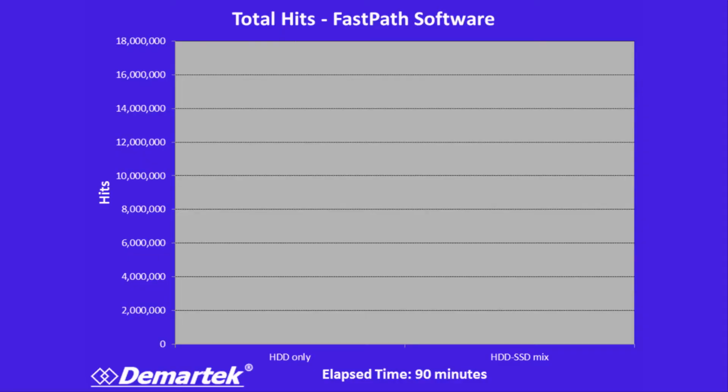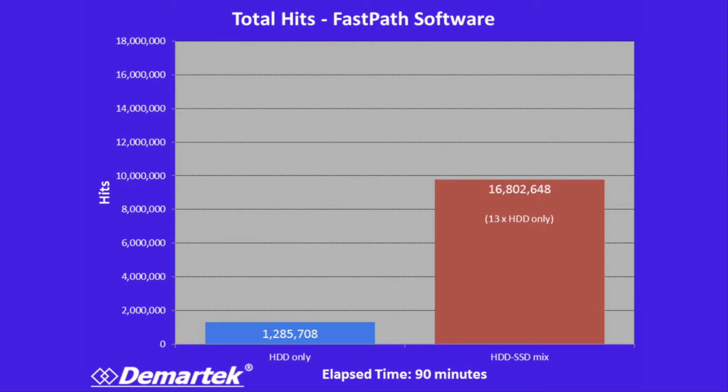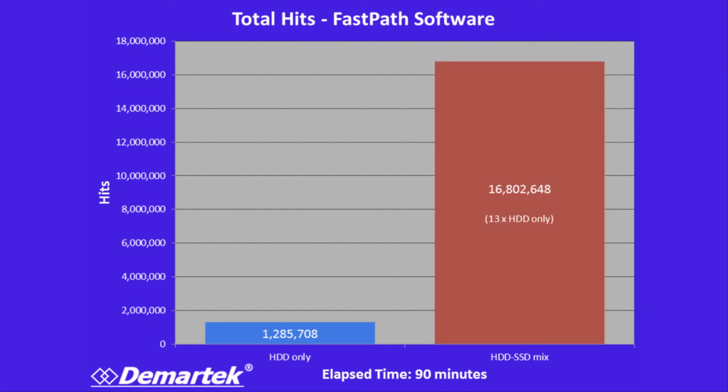Another measure of web server performance is the number of hits — how many hits did the web server send back? So in our 90 minute test, we had more than a million hits on the hard drive configuration, but when we added the SSDs to the mix, we had more than 16 million. So you see 13 times the number of hits in the same 90 minute test period.